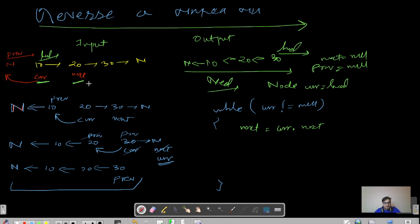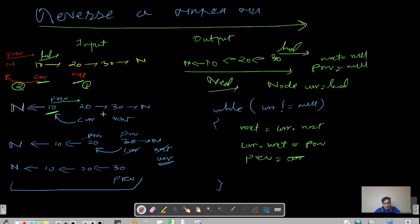The second step is to reverse the link: current.next = previous. The third step is to advance previous: previous = current. The fourth step is to advance current: current = next. These four lines of code inside the while loop are all that's required to get the reversal of our linked list.